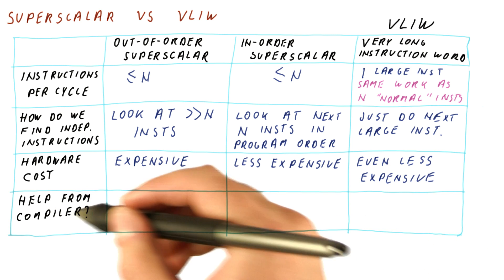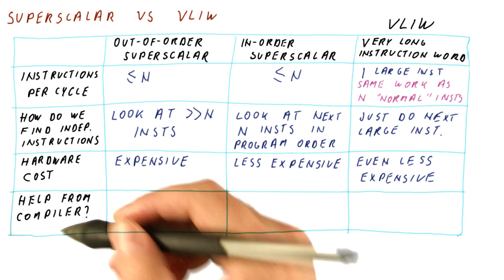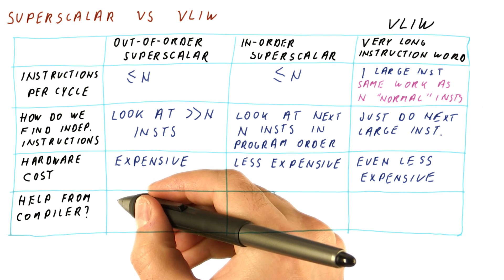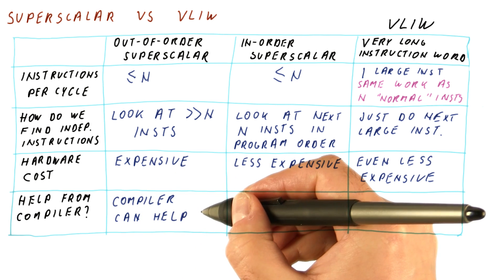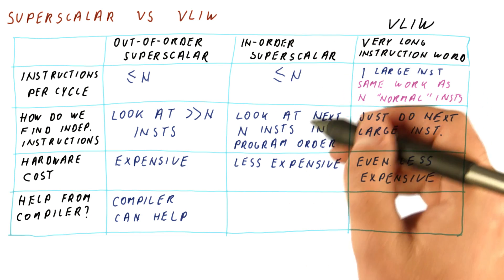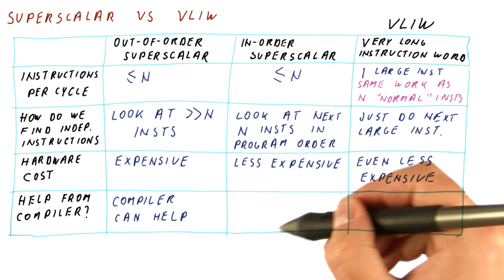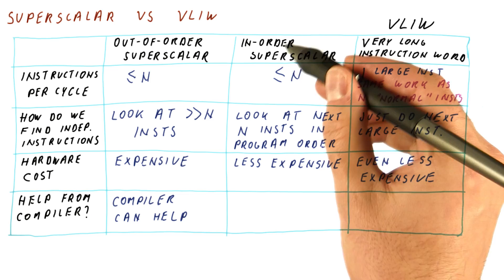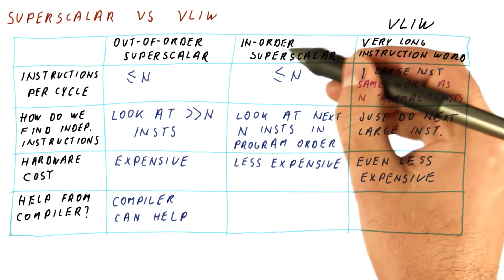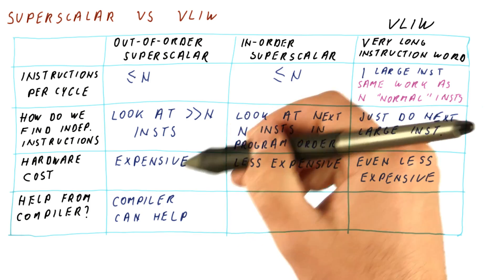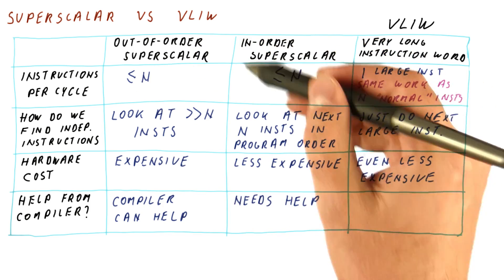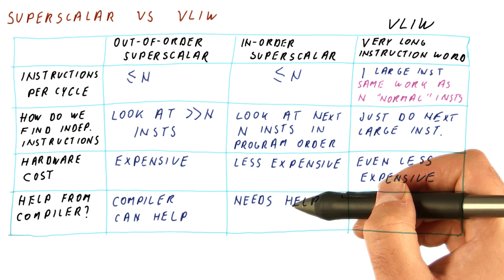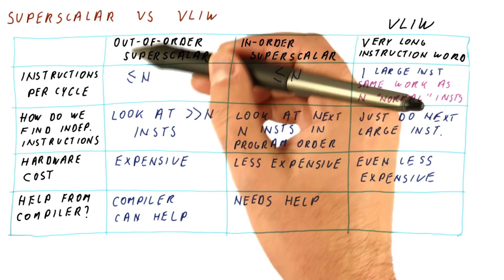That brings us to our last point: does the processor need help from the compiler? An out-of-order superscalar processor does pretty well even without compiler help, though the compiler can improve performance. An in-order superscalar processor is more dependent on the compiler. If the compiler doesn't arrange independent instructions consecutively, performance will lag significantly behind what an out-of-order processor with the same issue width would achieve. So an in-order superscalar processor really needs help from the compiler.